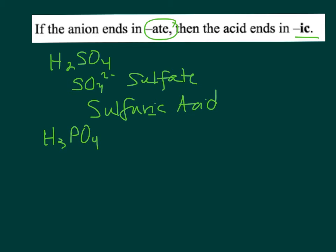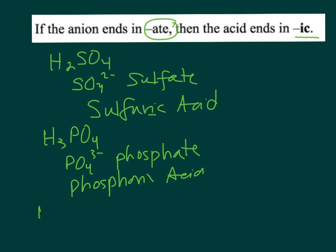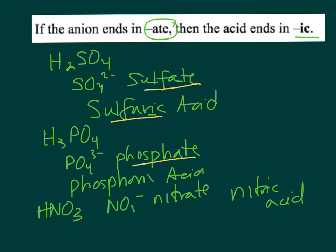H3PO4, the anion in there is PO4 3-, called phosphate, so this is phosphoric acid. HNO3, the anion is NO3-, and that is nitrate, so this is going to be nitric acid. So sulfate becomes sulfuric, phosphate becomes phosphoric, nitrate becomes nitric.